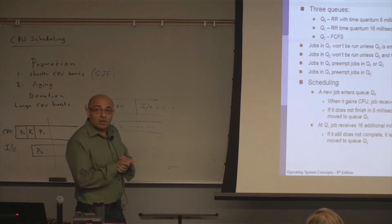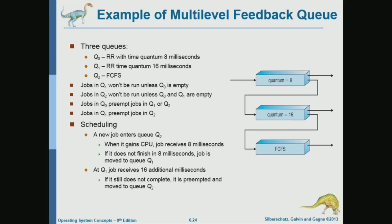With aging, a process will not stay in Q2 forever. Eventually it will spend enough time to get promoted to Q1, then if it doesn't get CPU time there it will get promoted to Q0 and given another chance. Its demotion will then depend on its CPU bursts — if they are long it will get demoted again. This scheme is the most realistic scheduling algorithm we study here, and it is similar to what real operating systems do.